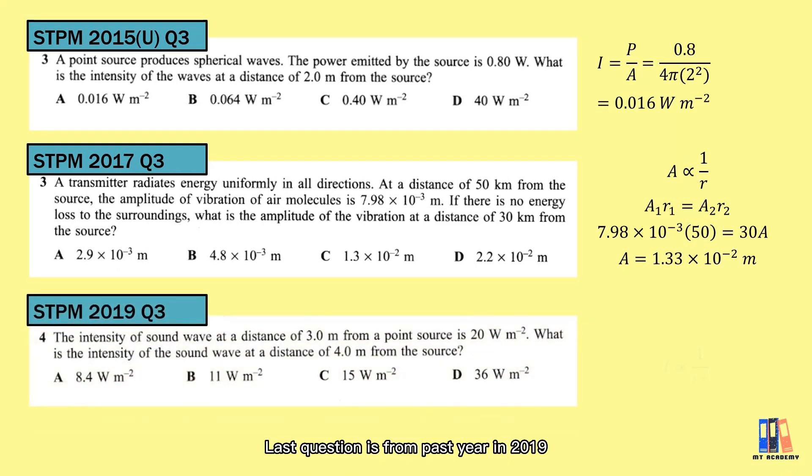Last question is from STPM 2019. Instead of amplitude, you are given the intensity of 20 watt per meter square at a distance of 3 meters. To obtain the intensity somewhere at a distance of 4 meters, the solution is almost similar with the previous question except that intensity is inversely proportional to the square of distance. So we have the equation I1·r1² = I2·r2². Put in the value, you should obtain the answer is equal to 11 watt per meter square.